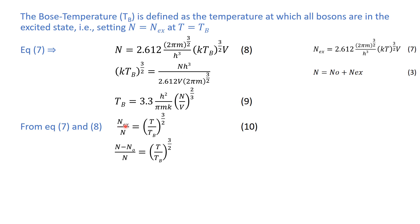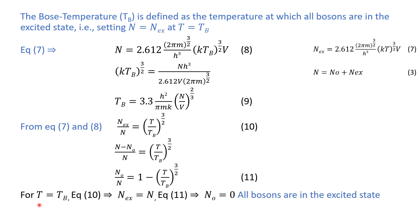Similarly, since the total number of particles N equals N0 plus N_ex, the number of particles in the excited state equals N minus N0. Rearranging, the ratio of the number of particles in the ground state to the total number of bosons is given by equation number 11. At the Bose temperature, from equation 10, N_ex equals N — that is, all bosons are in the excited state and there are no particles in the ground state.